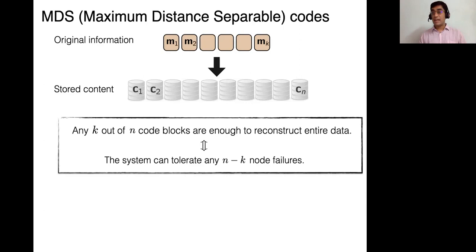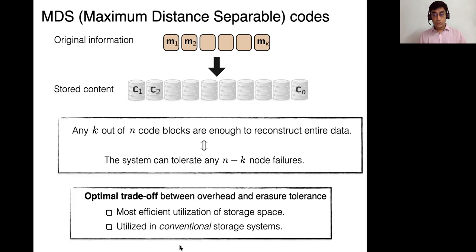And this is clearly optimal because if you access less than k, there is no chance for you to recover all the k symbols of information. And on the other hand, it's great that any k will do. Put another way, out of these n nodes, n minus k of them can fail. And yet, any of the remaining k will allow you to recover data. And this is the optimal trade off between storage overhead and erasure tolerance. And this is actually utilized in conventional storage systems all over the place, including CDs and hard disks and communication applications.